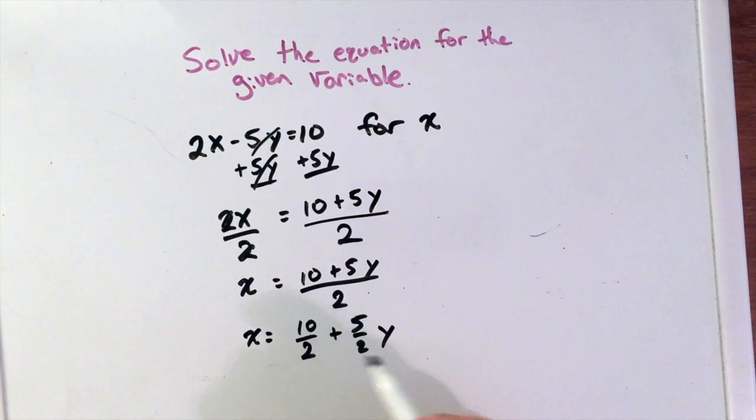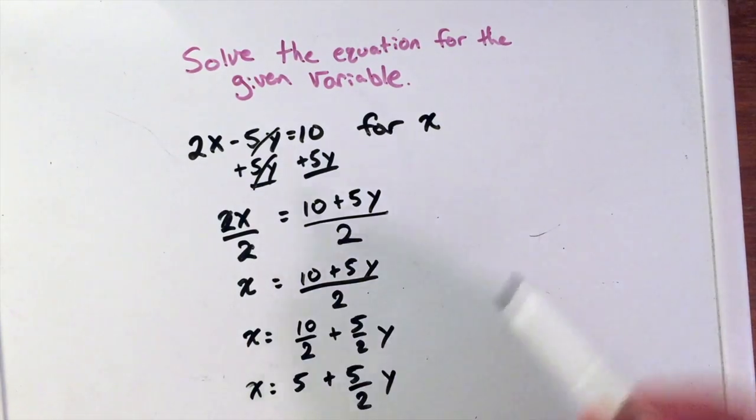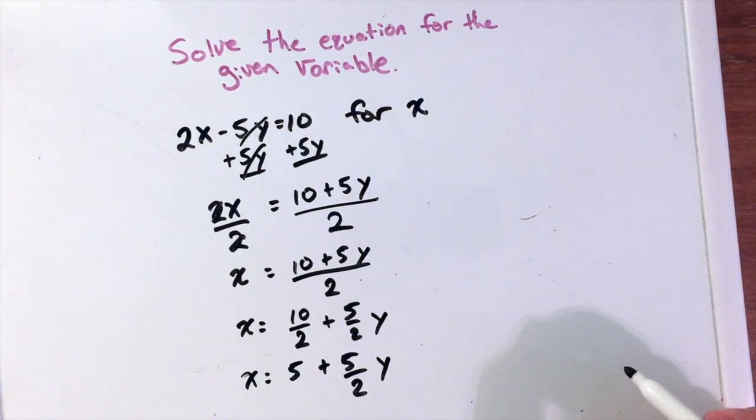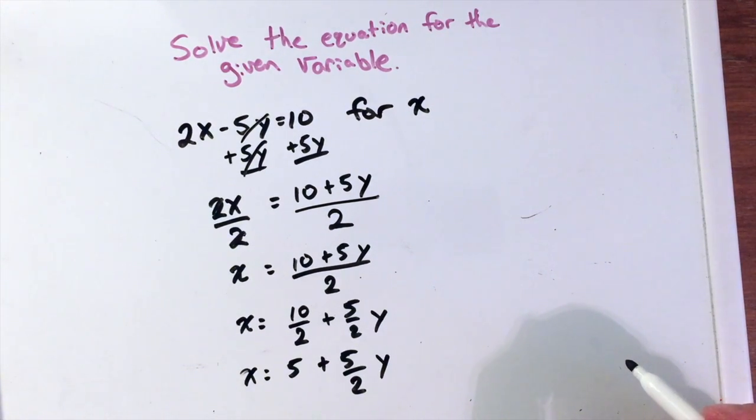And we can simplify 10 over 2 to be 5 because 10 divided by 2 is 5. So x equals 5 plus 5 halves y. And there we have x by itself and we have solved this equation for x. Thank you for watching and please subscribe to our YouTube channel and have a good day.